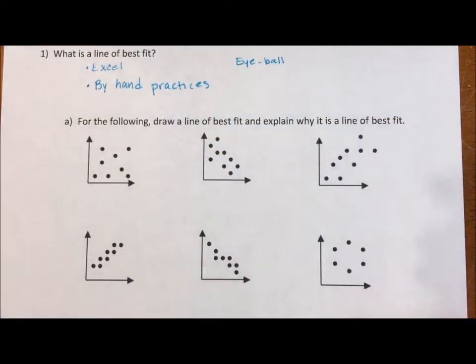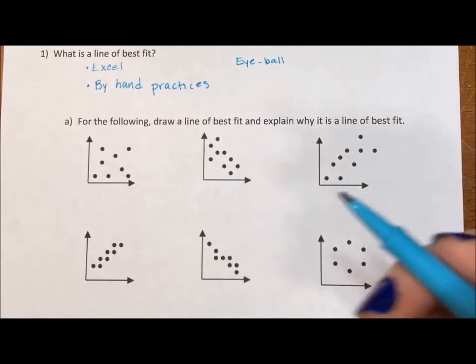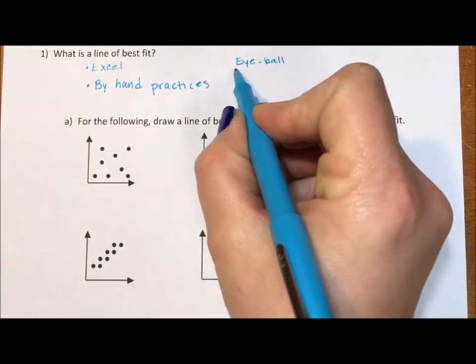We're going to use our eyes. We're just guesstimating. Every line of best fit is just guesstimating. All we're ever doing when we do a line of best fit is trying to figure out one line to represent them all.